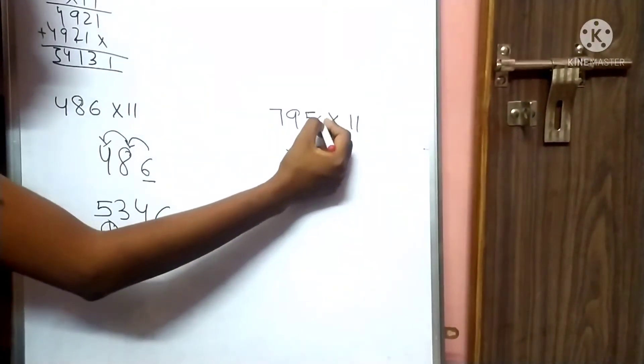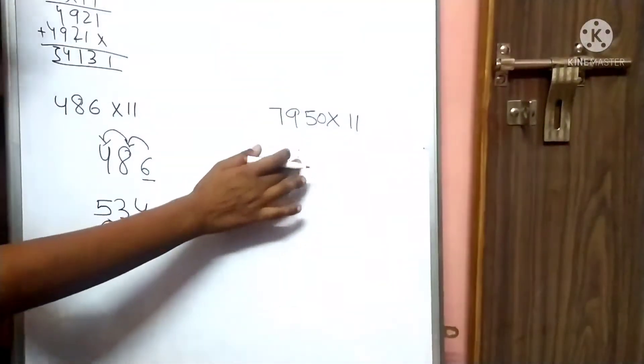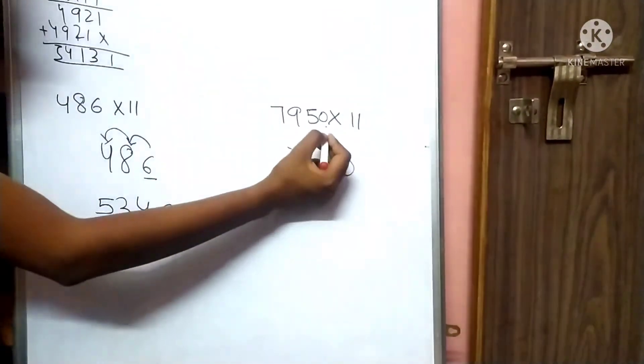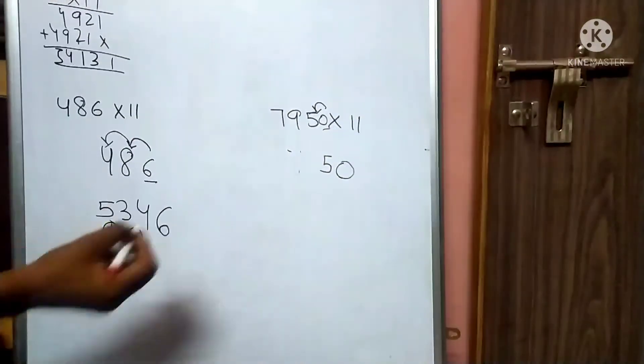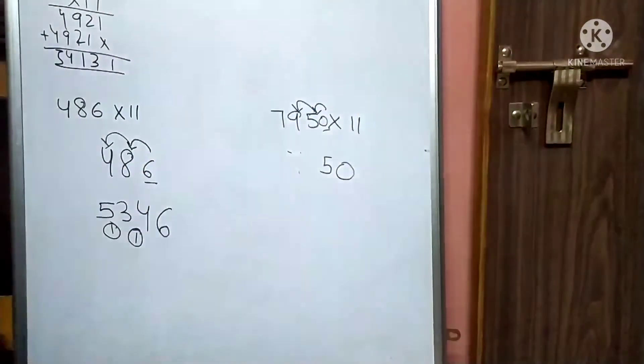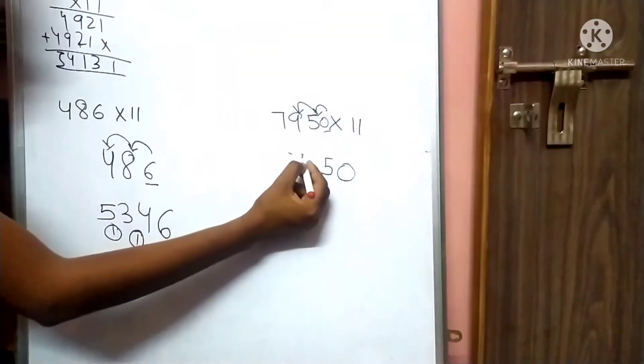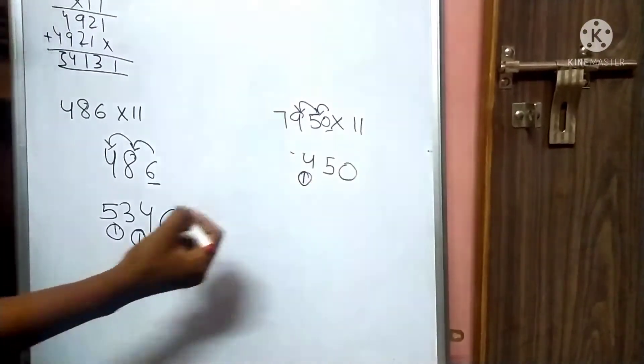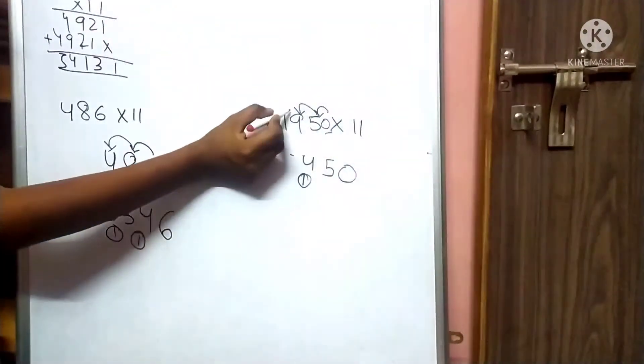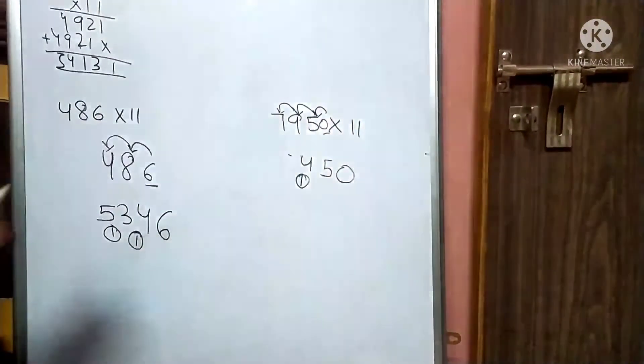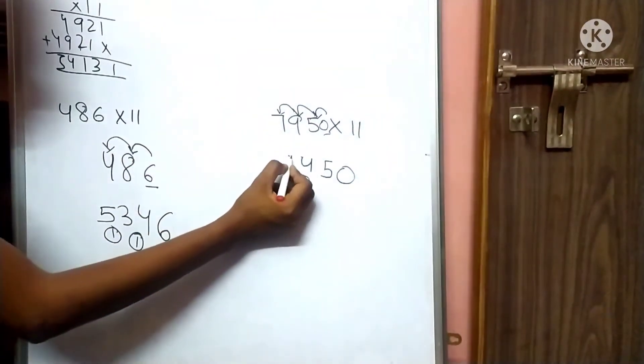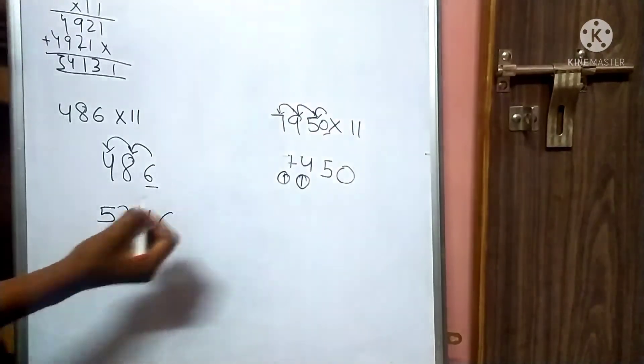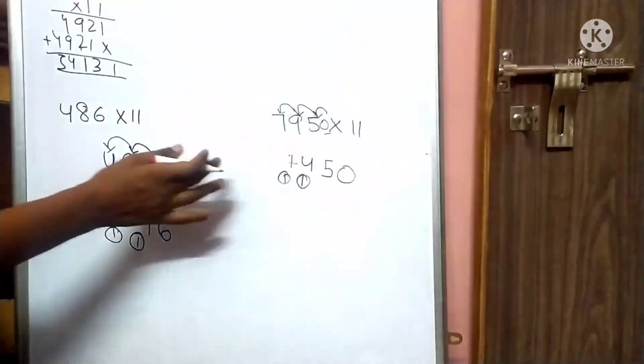Let's go here. 795 times 11. What will we do? We will put 5 as it is. We will add 5 plus 9 equals 14. Four, one carry. 9 plus 7 plus 1 carry equals 17. Now we have one carry.